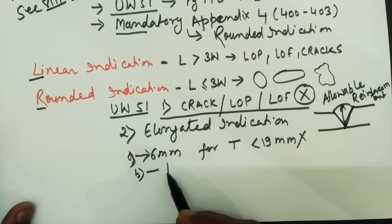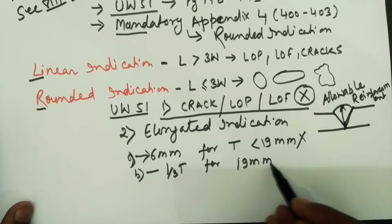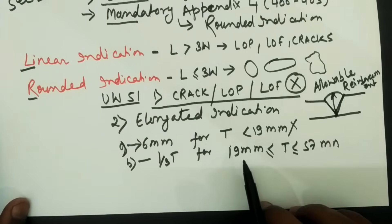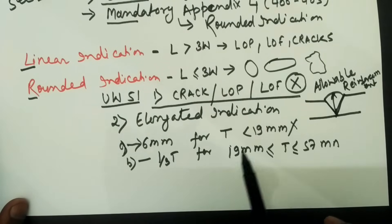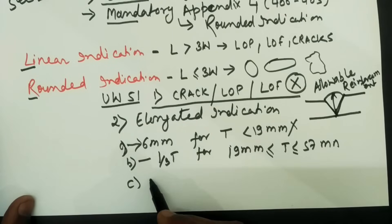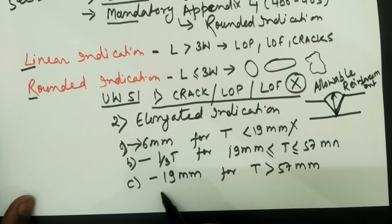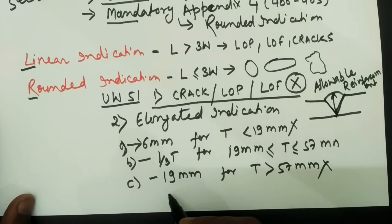For deposited weld metal thickness between 19 mm and 57 mm, any elongated indication with length more than one-third of T shall be rejected. For deposited weld metal thickness more than 57 mm, any elongated indication with length more than 19 mm shall be rejected.